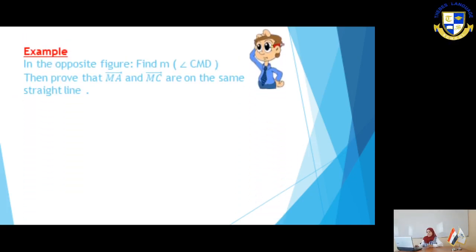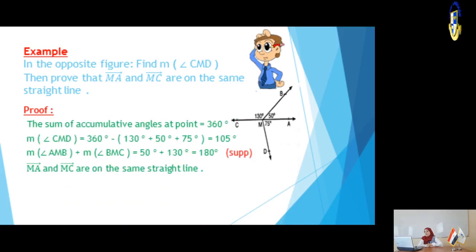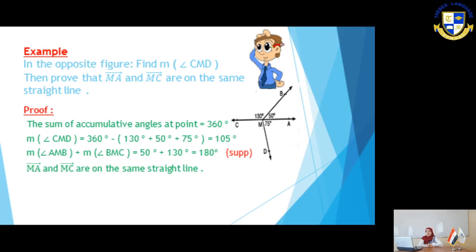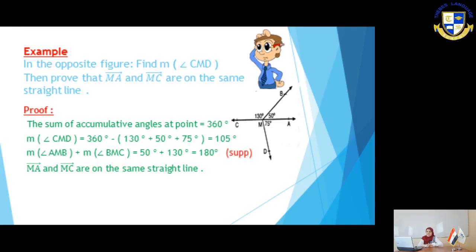Let's move to slide number 6. We have another example. In the opposite figure, find measure of angle CMD, then prove that ray MA and ray MC are on the same straight line. To prove that two rays are on the same straight line, we must prove that we have two adjacent supplementary angles — meaning the sum of their measures equals 180 degrees.